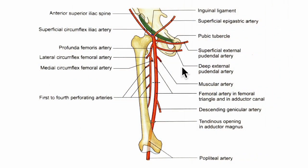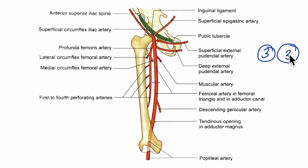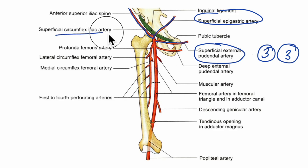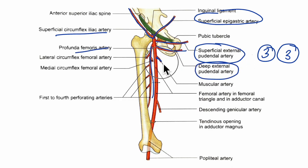Next, let's learn about the branches of the femoral artery. The femoral artery gives off three superficial and three deep branches. The superficial branches are the superficial external pudendal artery, the superficial epigastric artery, and the superficial circumflex iliac artery. The deep branches include the profunda femoris artery, the deep external pudendal artery, and the muscular branches.